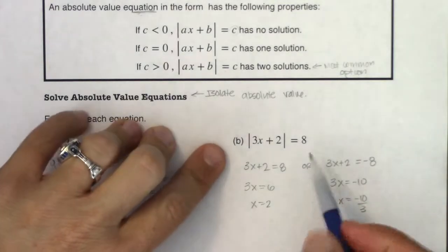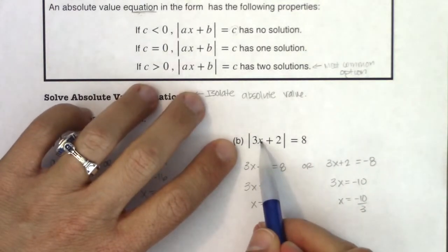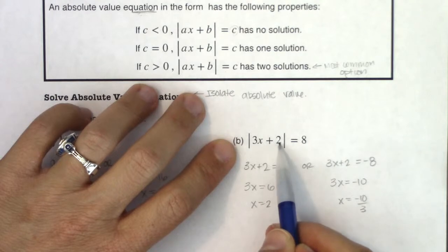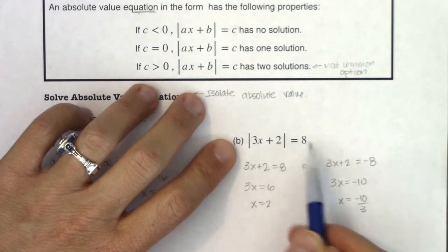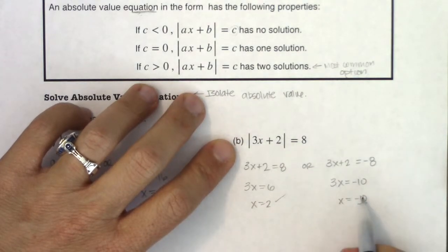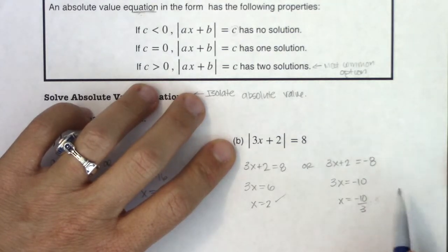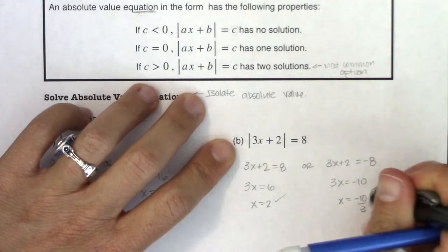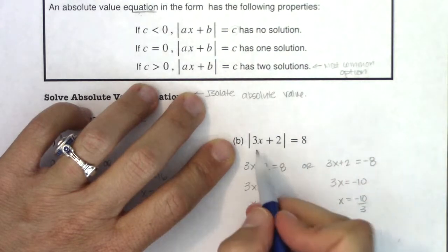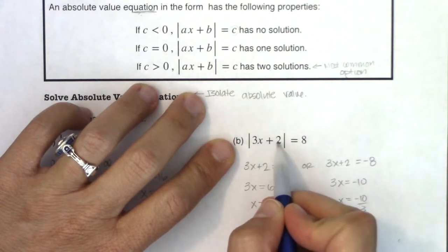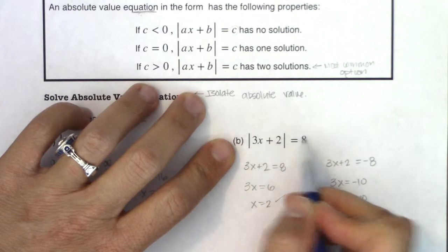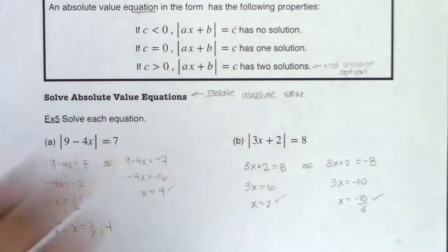Let's check those. For x equals 2: 3 times 2 is 6, plus 2 is 8 — absolute value of 8 is 8. For x equals negative 10 thirds: 3 times negative 10 thirds is negative 10, and negative 10 plus 2 is negative 8 — the absolute value of negative 8 is still 8. So this checks out as well.